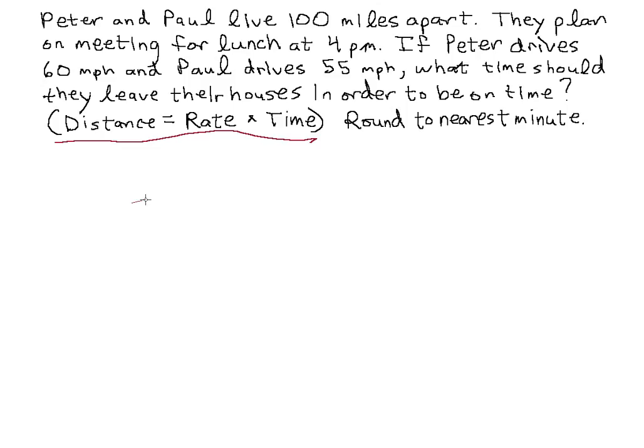Let's use this line right here. And this line represents the distance between Paul's house and Peter's house. So this distance right here, we're given as 100 miles. They live 100 miles apart.